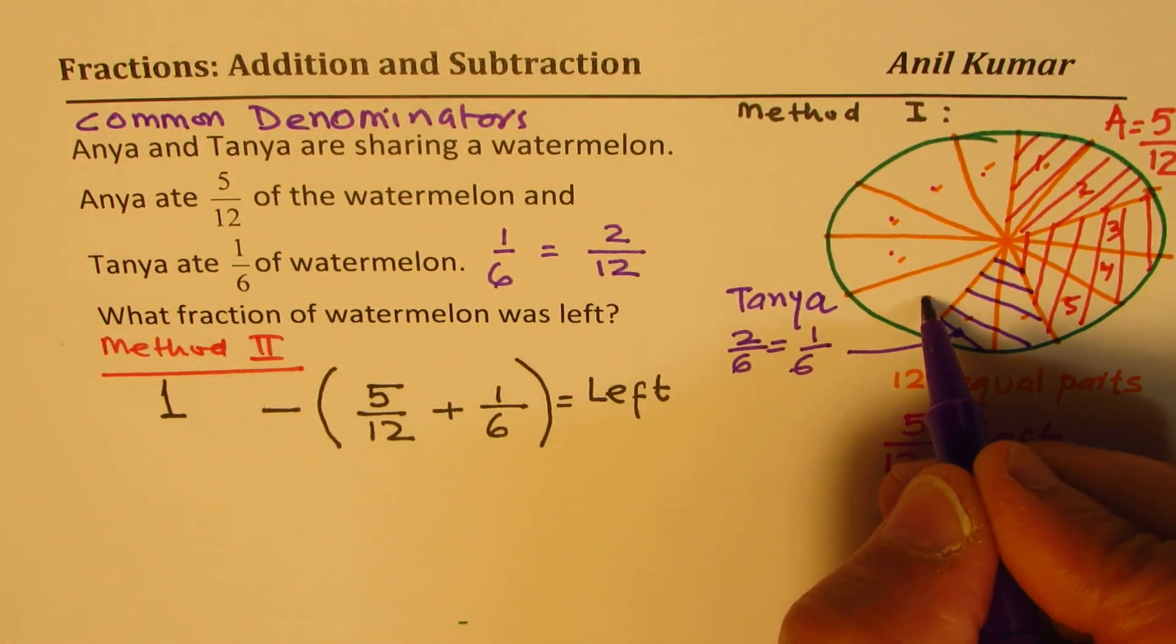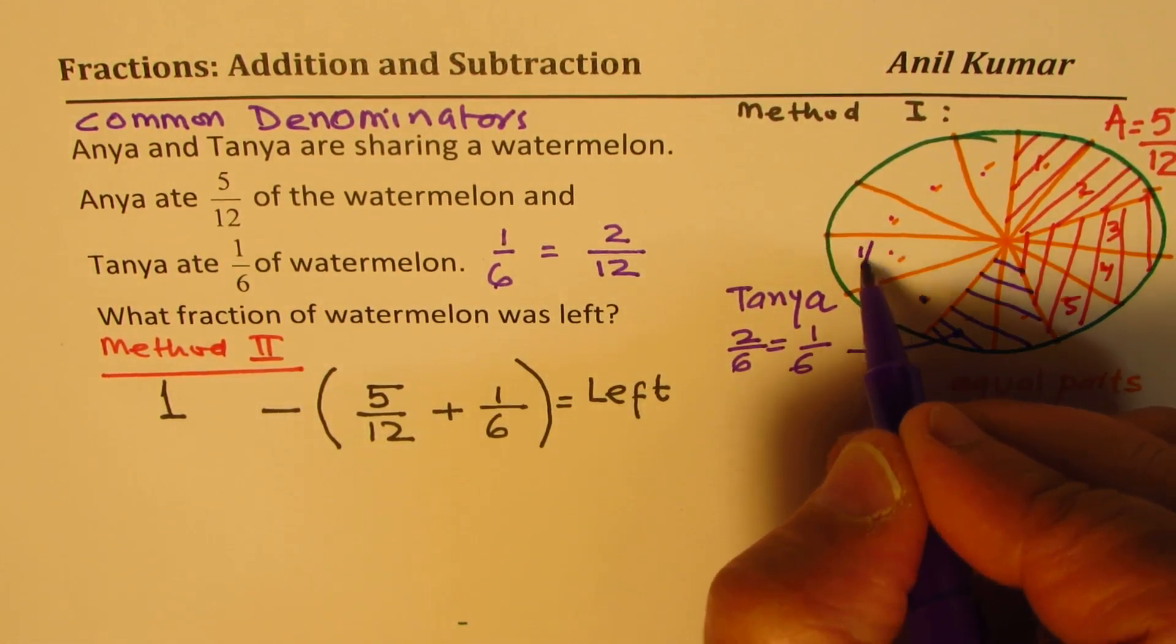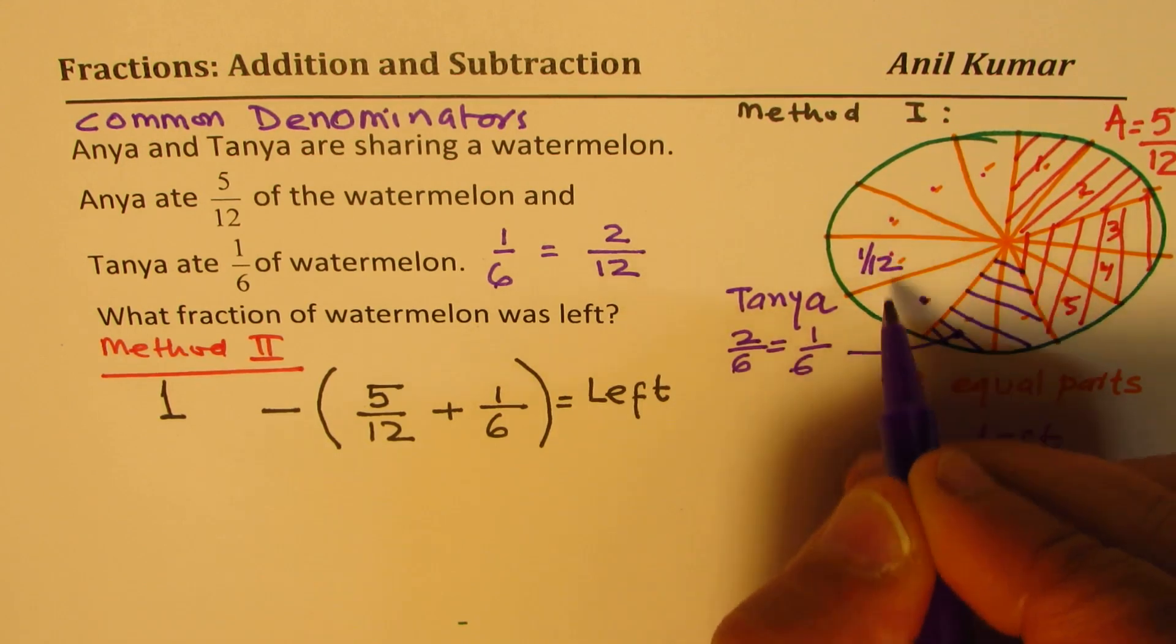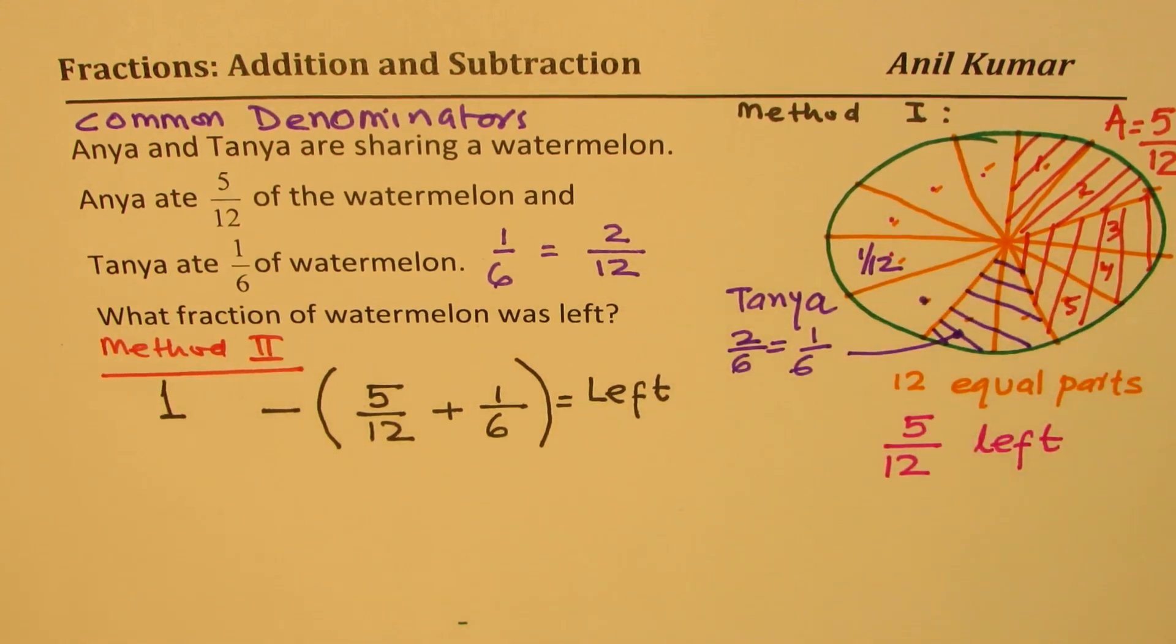Which is like 1/12th. Do you see this 1/12th? Each is 1/12th. So 12 pieces, equal pieces. That is your denominator.